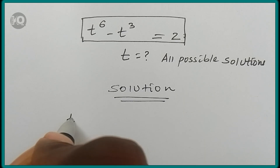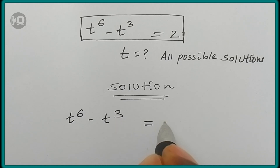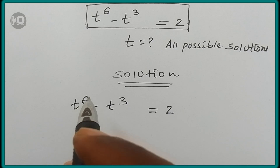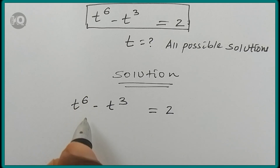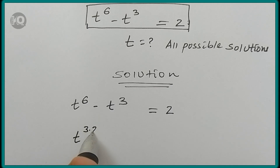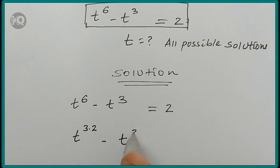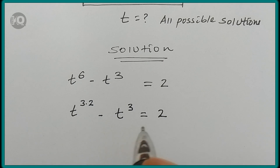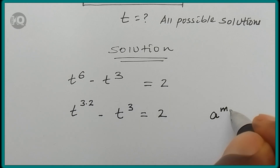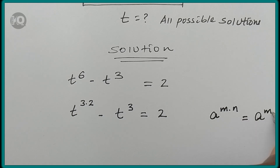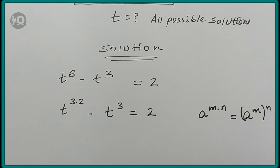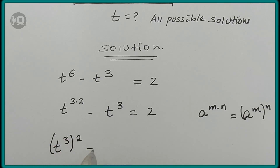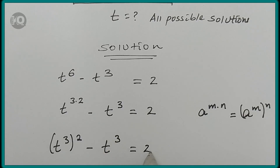Let's rewrite the problem: t to the power of 6 minus t to the power of 3 is equal to 2. We can rewrite the exponent in the first term — t to the power of 6 — by writing 6 as the product 3 times 2, giving t to the power of 3 times 2 minus t to the power of 3 equals 2. Using the rule of exponents, a to the power of m times n equals a to the power of m, to the power of n, this becomes t to the power of 3, to the power of 2, minus t to the power of 3, equals 2.